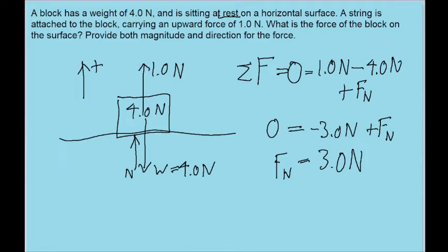So that means that the block exerts a force on the table of negative 3.0 newtons. So the 3.0 newtons is the magnitude, and this negative indicates that the force that the block exerts on the table is pointed downwards. So this is our answer to the problem.